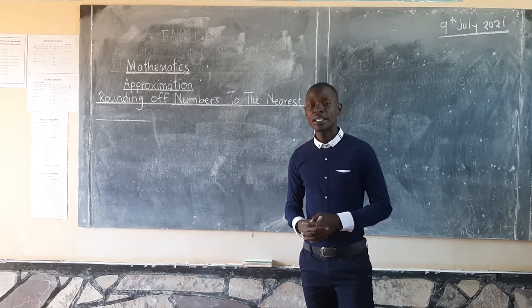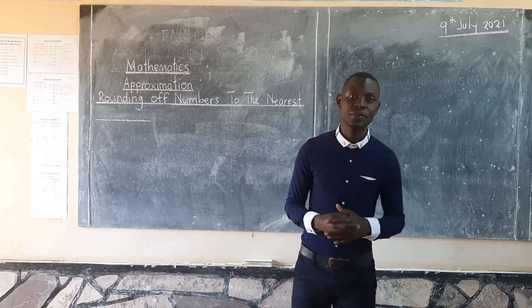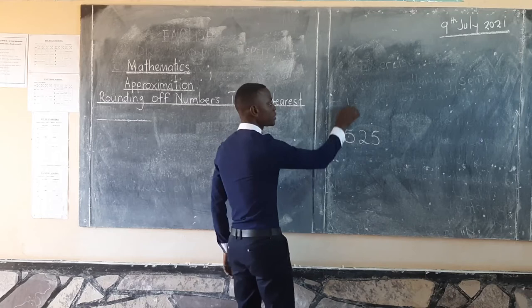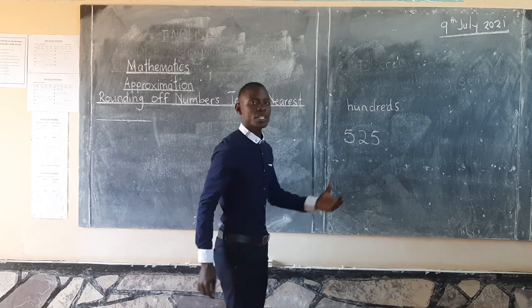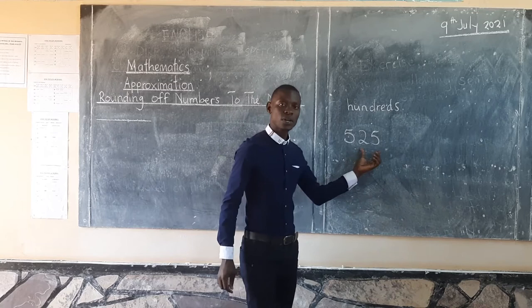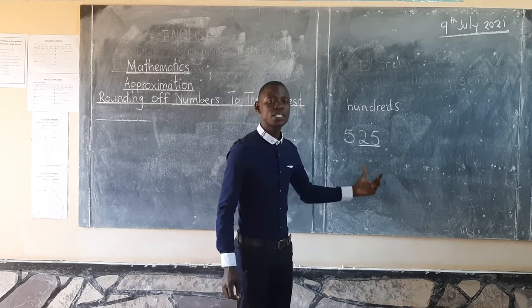Last time we looked at rounding off numbers to the nearest hundreds. If you have a number like 525, and you are told to round off this number to the nearest hundreds, there are some steps to follow.